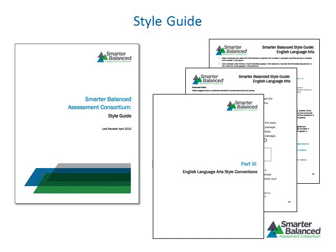The Smarter Balanced Style Guide provides both global style conventions that apply to all content areas and style conventions that are specific to English language arts. The style conventions provide guidance on a variety of issues, including the layout and design of items and tasks, methods for emphasizing content in items, and use of numerals and words for numbers in narrative text. It is important to review the Smarter Balanced Style Guide before writing items and tasks.